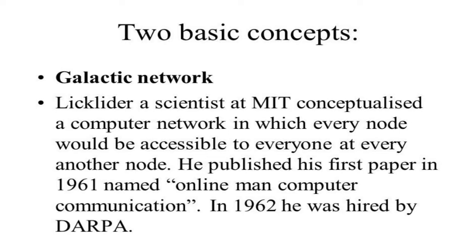Licklider was a scientist at MIT who conceptualized a kind of computer network in which every node would be accessible to everyone at every other node. A node means a unit — you can say one computer. The concept was that it would be a kind of network where every computer would be accessible to everyone at every other computer. So if you are sitting on a laptop connected to the internet, your computer is accessible to other computers lying all over the world. He published his first paper in 1961 titled 'Online Man-Computer Communication.'